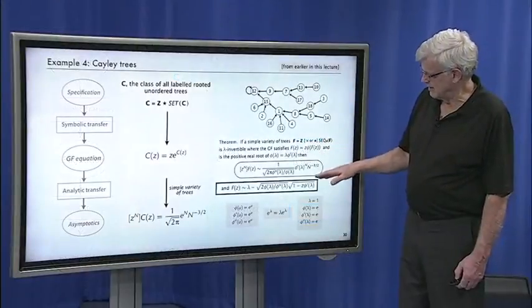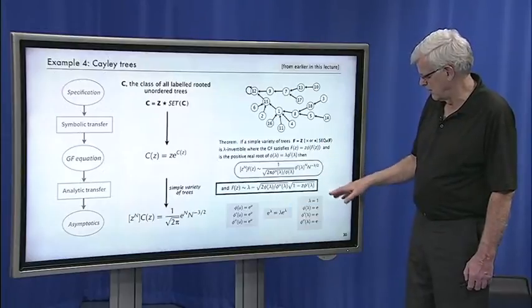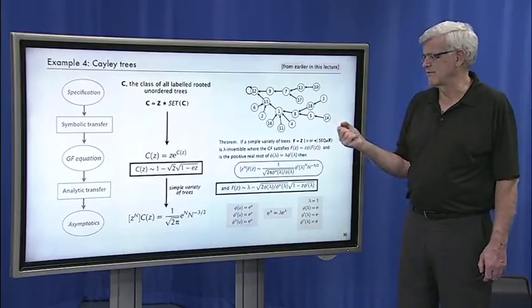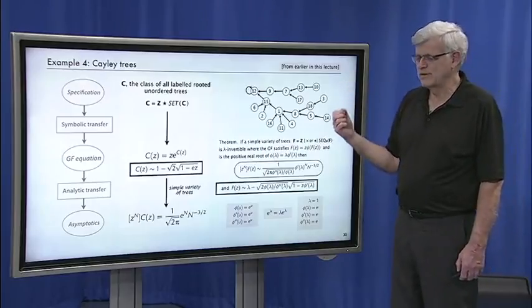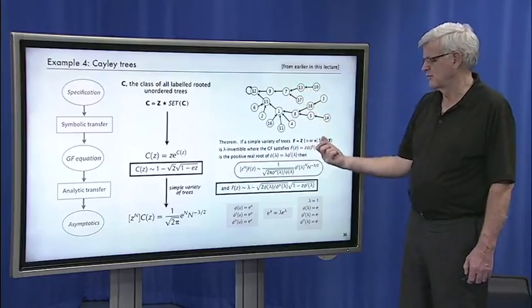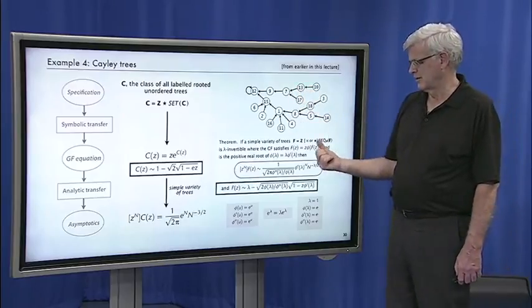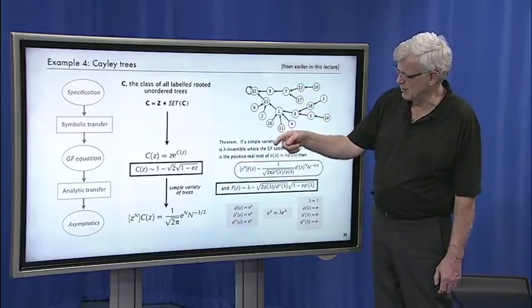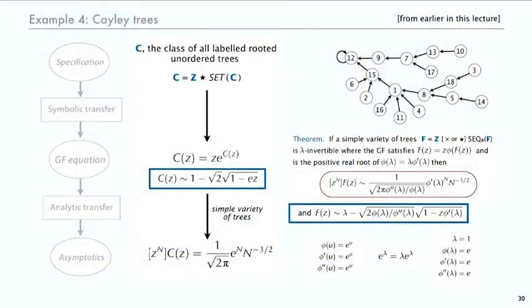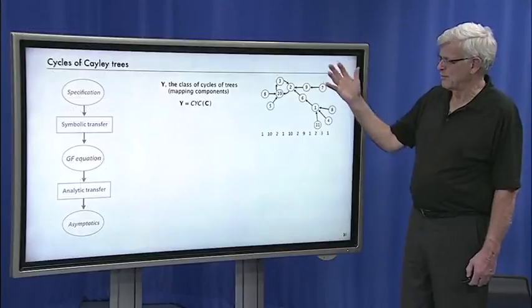So in this case, where lambda is one and ρ is e, it says that the generating function for Cayley trees is asymptotic to at 1/e, which is where the nearest singularity to the origin is. It's asymptotic to 1 - √2·√(1-ez).